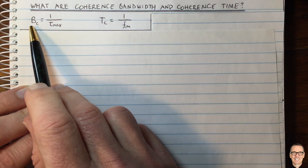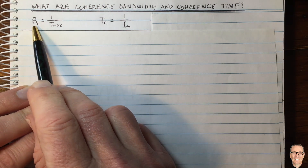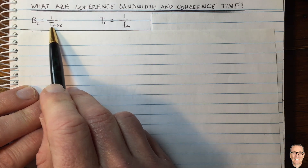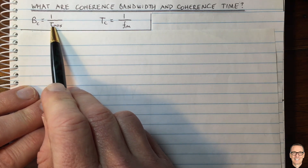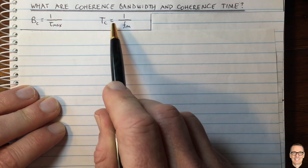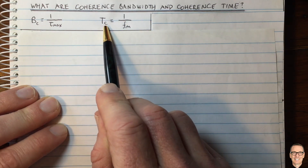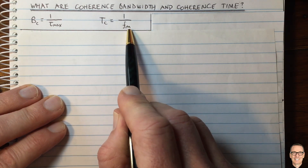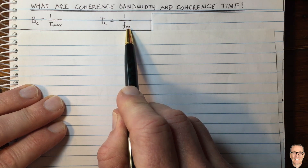Here are the definitions. The coherence bandwidth is defined as being the inverse of the maximum delay in the channel. And the coherence time is defined as being the inverse of the maximum Doppler shift in the channel.